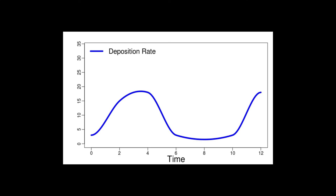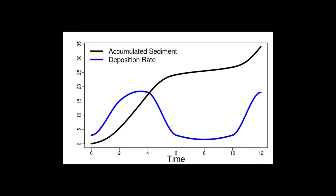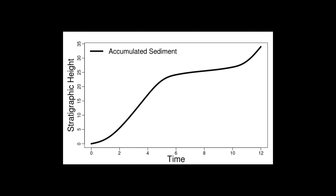I will present a method that allows incorporating one of the three processes — changes in deposition rate — into the stratigraphic distribution of fossils. Here you can see a deposition rate shown in blue, but instead of the deposition rate itself, we will look at the accumulated sediment, which is just the integral over the deposition rate. This function connects time with stratigraphic height and can be used to take a sample for which we know when it was deposited and determine the stratigraphic height we will find it in the outcrop. Conversely, for a sample found at 17 meters stratigraphic height, we can determine it was deposited after four time units.